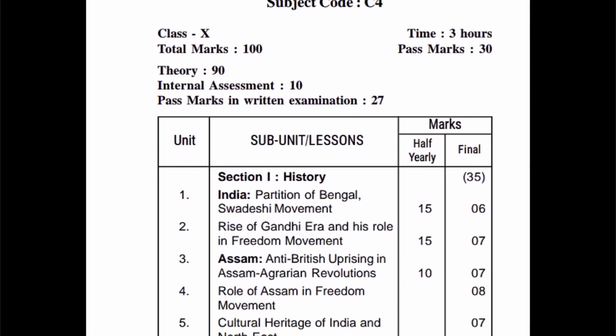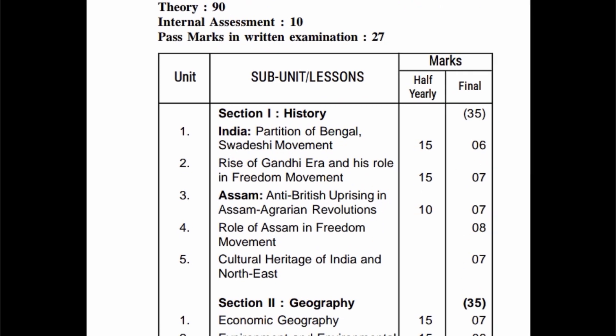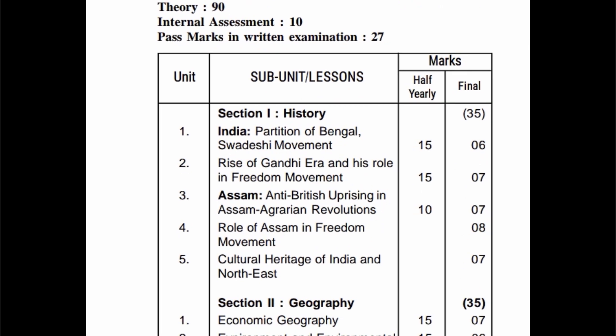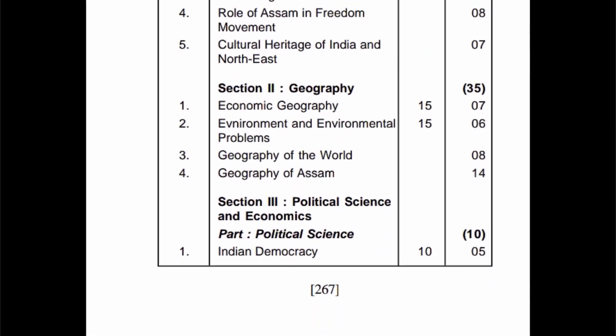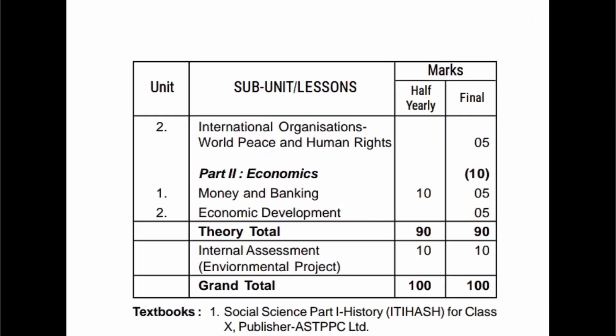Mark distribution: Chapter 1 — 15 marks; Chapter 2 — 15 marks; Chapter 3 — 10 marks. Geography: Chapter 1 — 15 marks, Chapter 2 — 15 marks. Political chapter: 10 marks. Economics chapter: 10 marks.